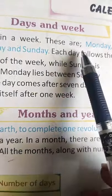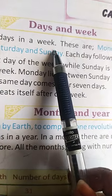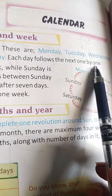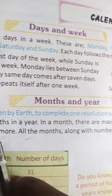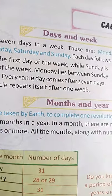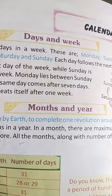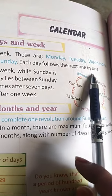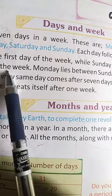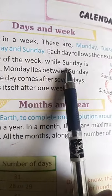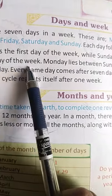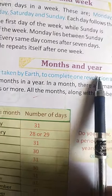Days and Week: there are 7 days in a week — 1 week, 7 days. These are Monday, Tuesday, Wednesday, Thursday, Friday, Saturday, and Sunday. Each day follows the next day one by one. Monday is the first day of the week, while Sunday is the last day of the week.